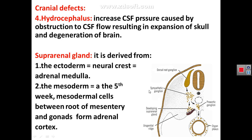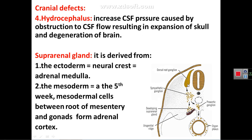The suprarenal (adrenal) gland is histologically formed of a cortex and a medulla. The medulla is derived from neural crest cells, while the cortex is derived from mesodermal tissue formed in the region between the root of the mesentery of the small intestine and the gonad, which migrates to the adrenal gland. Therefore, the medulla is said to be derived from ectoderm — because ectoderm is the source of the neural crest — while the cortex is from mesoderm.